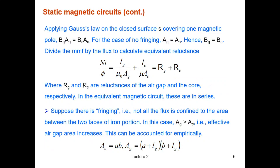We also apply the Gauss law on the closed surface S covering one magnetic pole. To find out BgAg, which is the total flux going through the air gap, is equal to BcAc, which is the flux going in the core. And it should be like that because the flux is similar to the current. So current in series circuits—you will see that we have the same current going through all the components. So this is exactly the same case here.